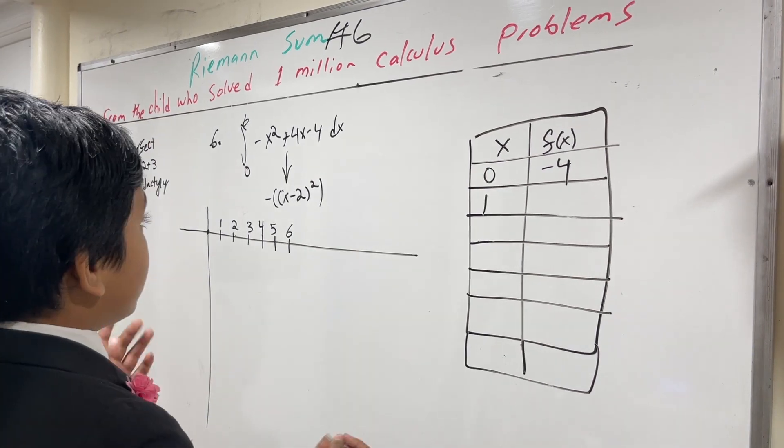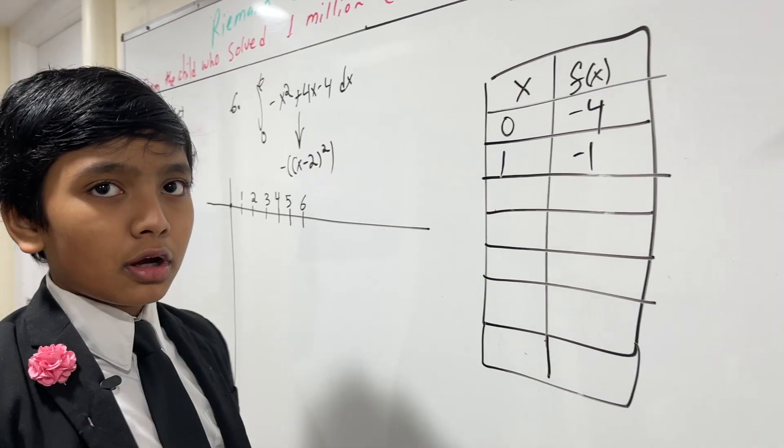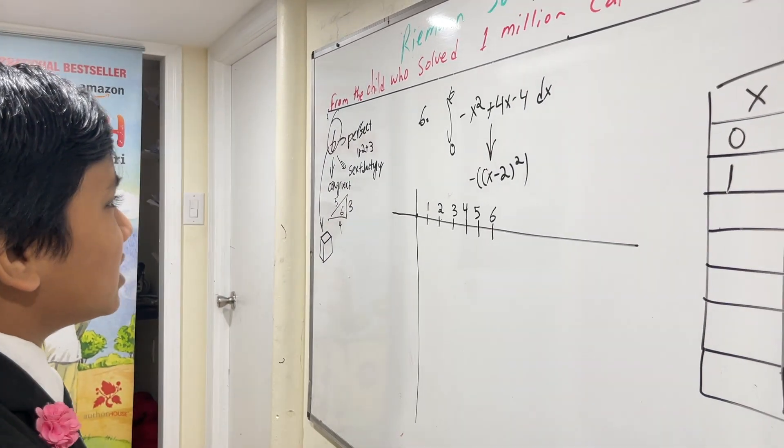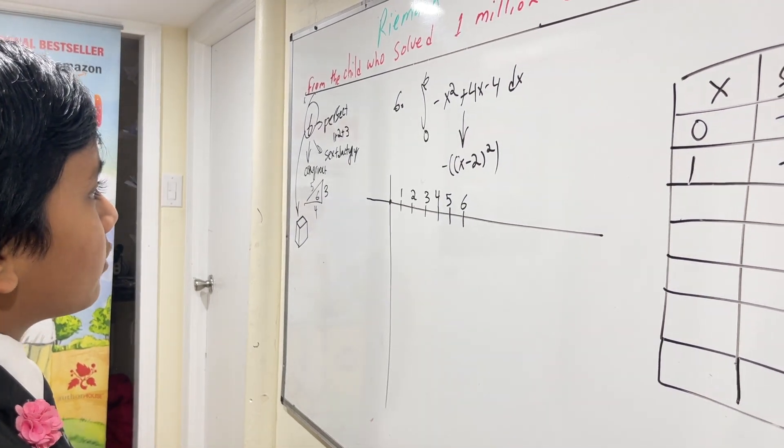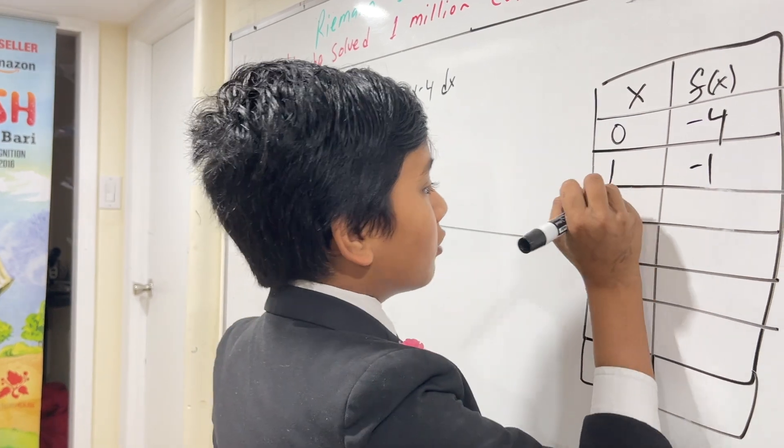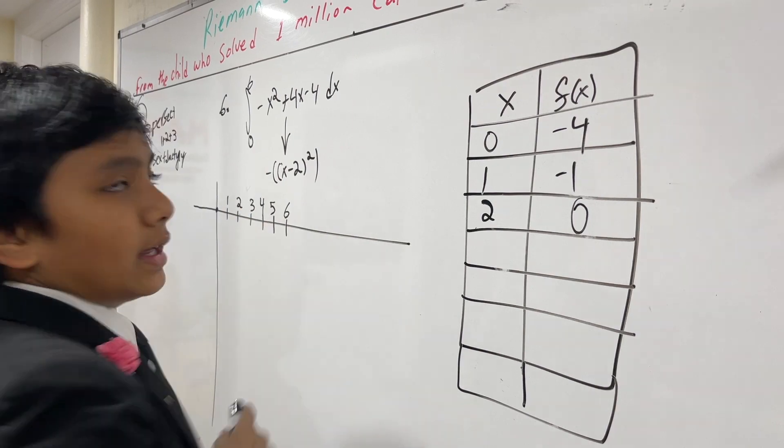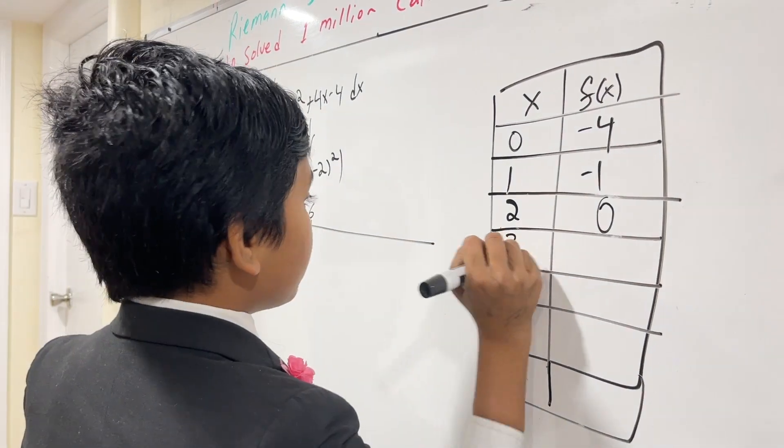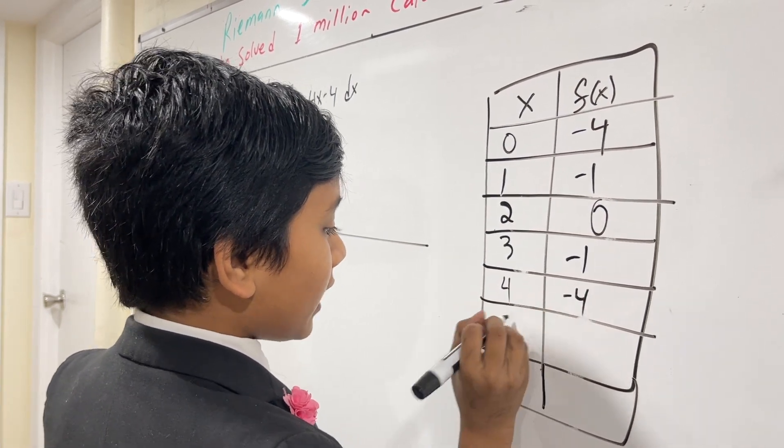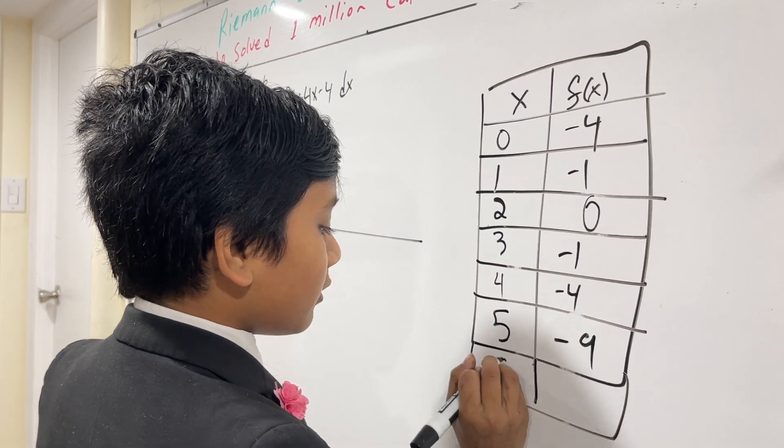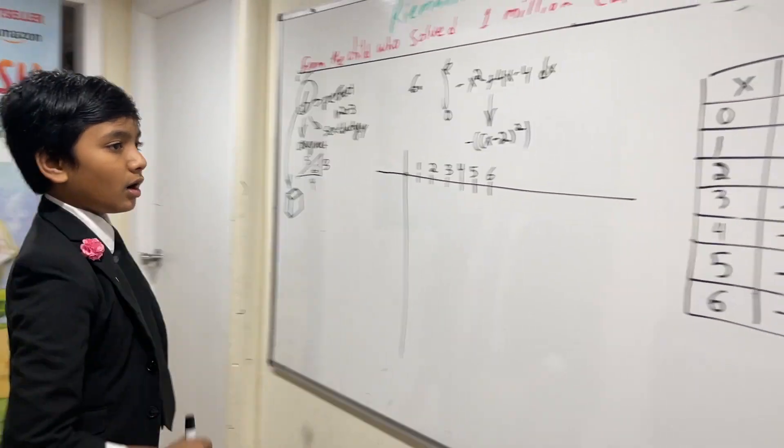For number one, it's obviously minus one. For number two... wait, is it minus one? Let me see. One squared, so that's minus one plus one minus four. Okay, minus four. If you plug in two, it equals zero. When you go into here, then it returns zero, obviously. Then, if you plug in three... this is a quadratic with a vertex. Minus nine. For number six, you get minus sixteen.